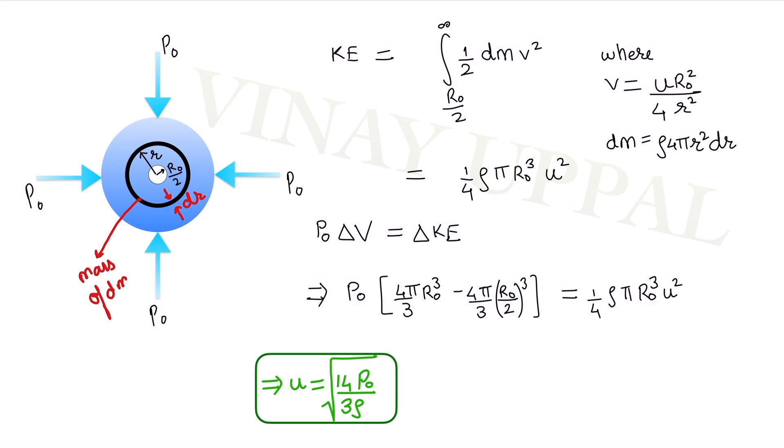And then it is just straightforward algebra. I am going to leave this calculation to you. Just like I left this integration, I am sure you will be able to integrate this on your own. From this equation, you will be able to get a simple relation for speed as root of 14 by 3 P0 by ρ, and this is your final answer. This is the rate at which the bubble radius is decreasing at the instant its radius is R0 by 2.